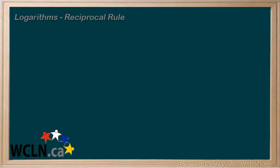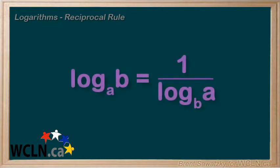And our last log rule here is called the reciprocal rule, and it's really just an adaptation of the base change rule. And it's summarized as log base a of b equals 1 over log base b of a. So just switched.